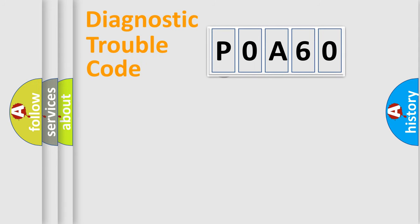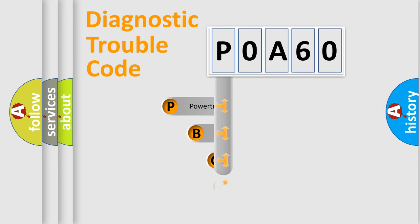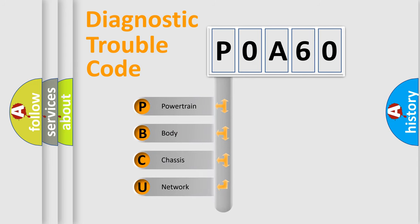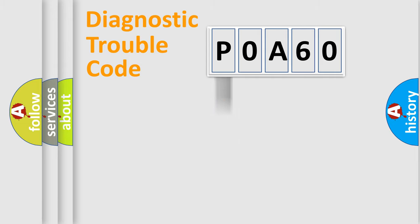First, let's look at the history of diagnostic fault code composition according to the OBD2 protocol, which is unified for all automakers since 2000. We divide the electric system of an automobile into four basic units: Powertrain, Body, Chassis, and Network. This distribution is defined in the first character of the code.